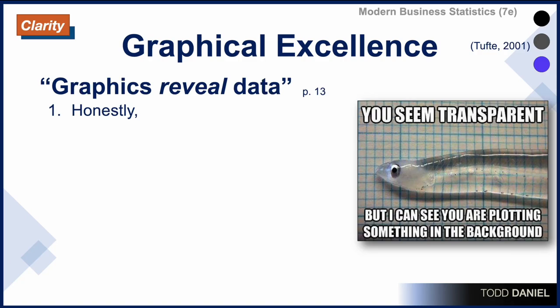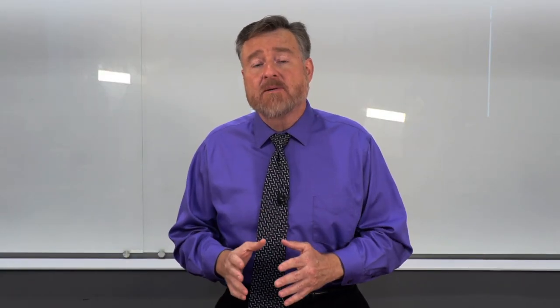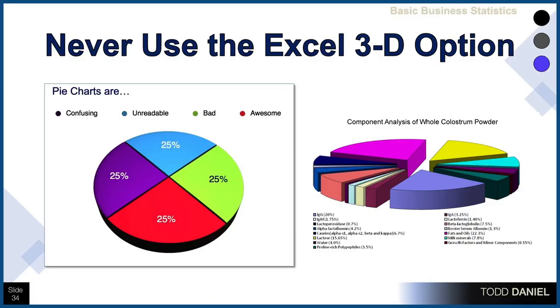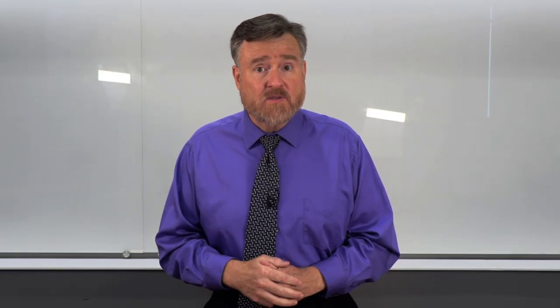The second quality of graphical excellence that Dr. Tufte describes is that graphics reveal data without distortion. You may recall when we were talking about pie charts, I showed you an example of a 3D pie chart in Microsoft Excel and clearly illustrated how the three-dimensional pie chart distorts the data — making pie slices that are the same size appear larger or smaller because of the way that graph has been twisted in space. This is another reason why we don't use pie charts if we have a better option available.